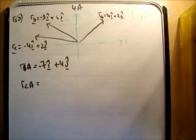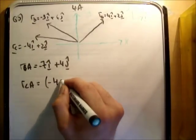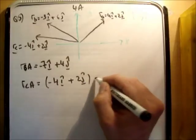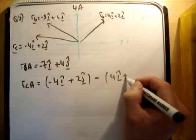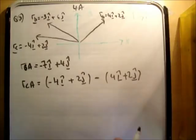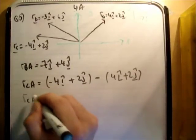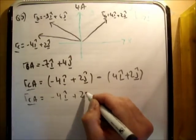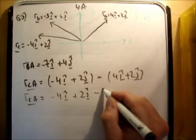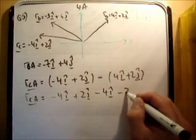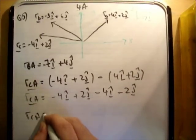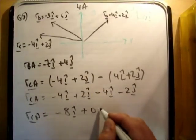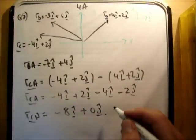So that's going to be R C minus R A. So it's going to be negative 4i hat plus 2j hat minus 4i hat plus 2j hat. R C A, excuse me, that's a vector. So you're going to negative 4i hat, positive 2j hat, negative 4i hat, negative 2j hat. R C A is equal to negative 8i hat plus 0j hat. And that's correct as well.